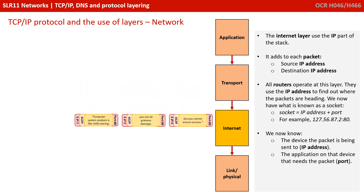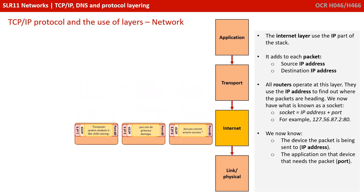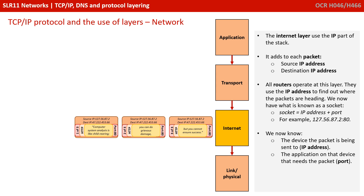Our packets now arrive at the internet layer, which uses the IP part of the stack. It adds to each packet the source IP address and also the destination IP address. All routers operate at this layer and use the IP address to find out where the packets are heading. We now have what's known as a socket — that's the IP address plus the port — so we know the device the packet is being sent to and the application on that device that needs the packet.